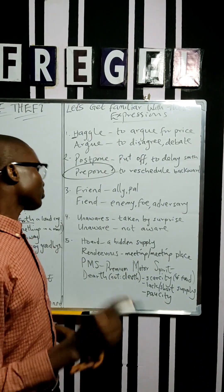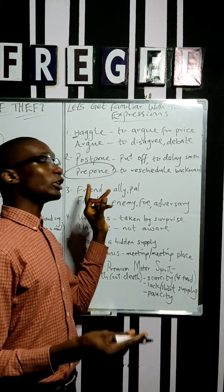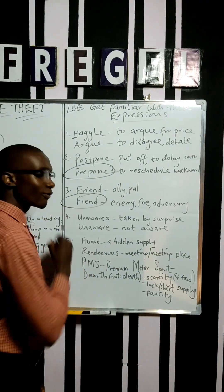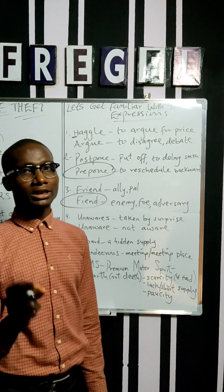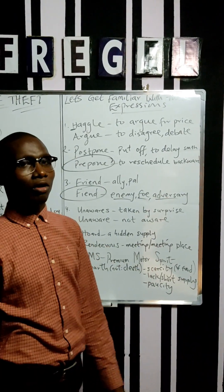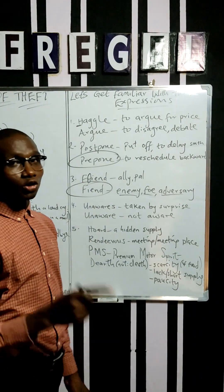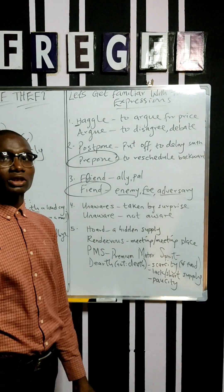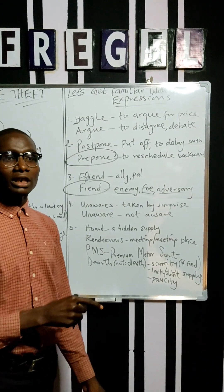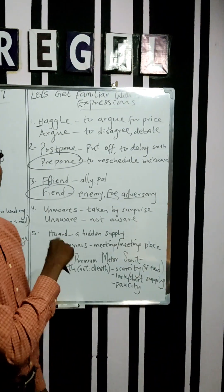Then we come to friend and fiend. We all know friend is an ally, and the opposite is enemy or foe. But fiend is not so common. Fiend is another word for enemy, foe, or adversary. All you have to do is remove the R from 'friend' and you have 'fiend.' So if you have a problem spelling 'friend' and write F-I-E-N-D, you'll be spelling 'fiend.'